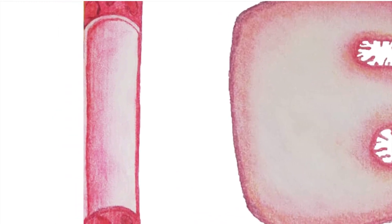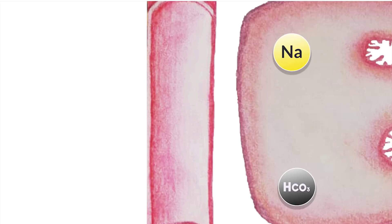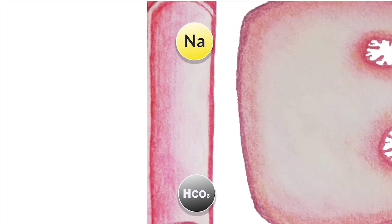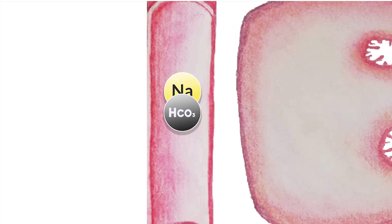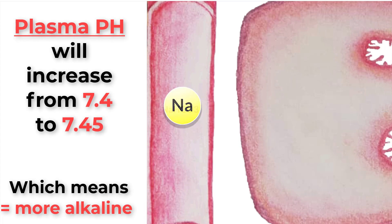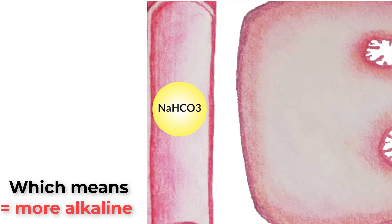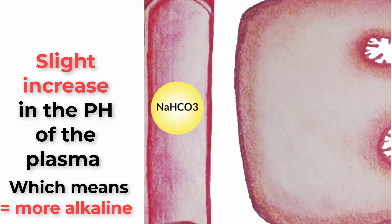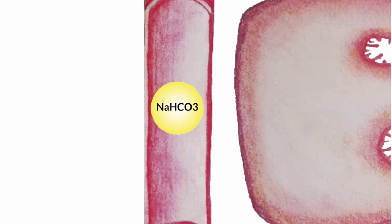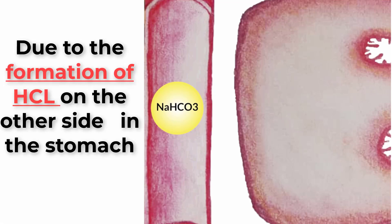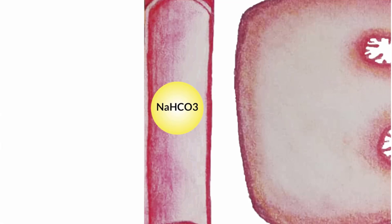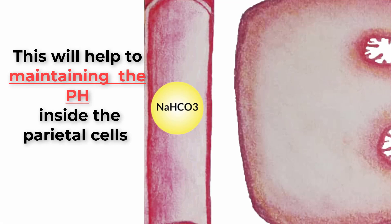Now let's discuss the phenomenon called alkaline tide, or postprandial alkaline tide. When sodium is exchanged for potassium and bicarbonate is exchanged for chloride, sodium bicarbonate forms in the blood vessel, increasing plasma pH from 7.4 to 7.45 — a slight increase in plasma pH postprandially. This occurs due to the formation of hydrochloric acid on the other side, while sodium bicarbonate is formed in the blood. This slight pH increase helps maintain pH balance inside the parietal cells.